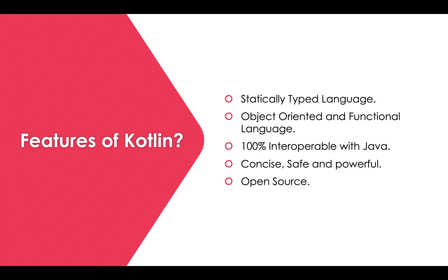Kotlin is both an object-oriented and functional language, so you can use OOP concepts similar to Java. It is 100% interoperable with Java — you can write code in Java and use it in Kotlin, and write code in Kotlin and use it in Java, because at the end both compile to bytecode.